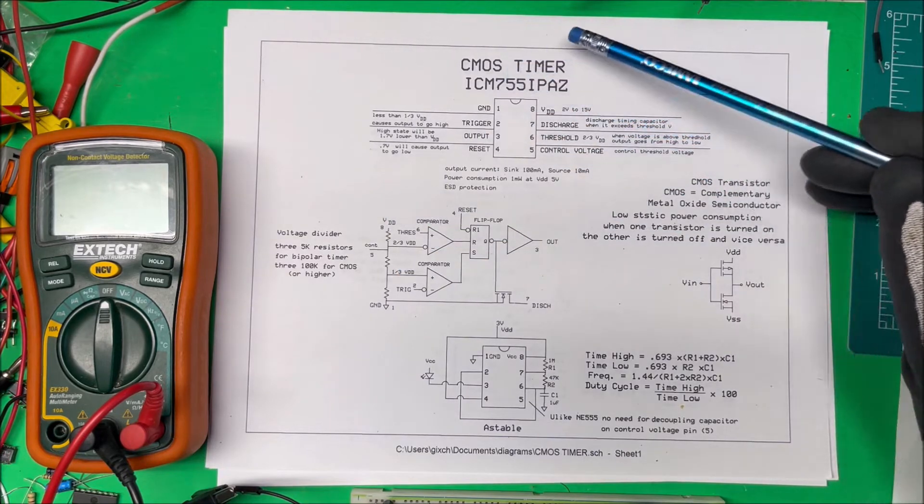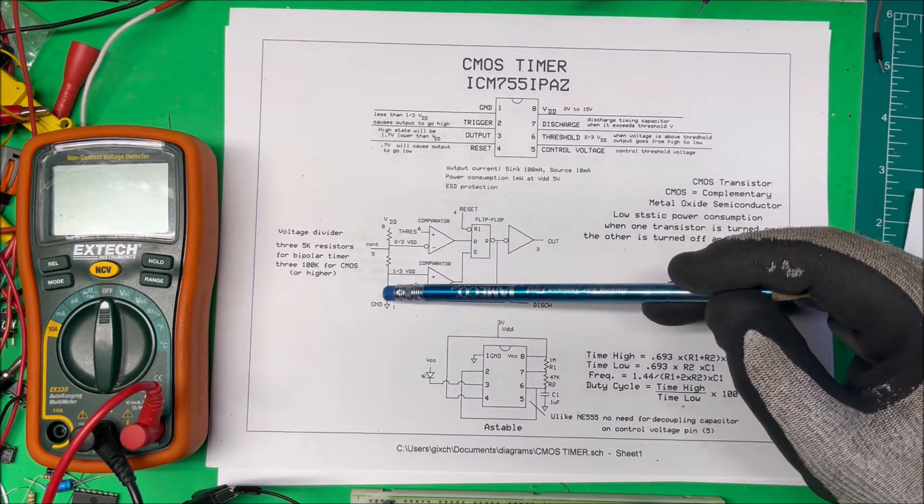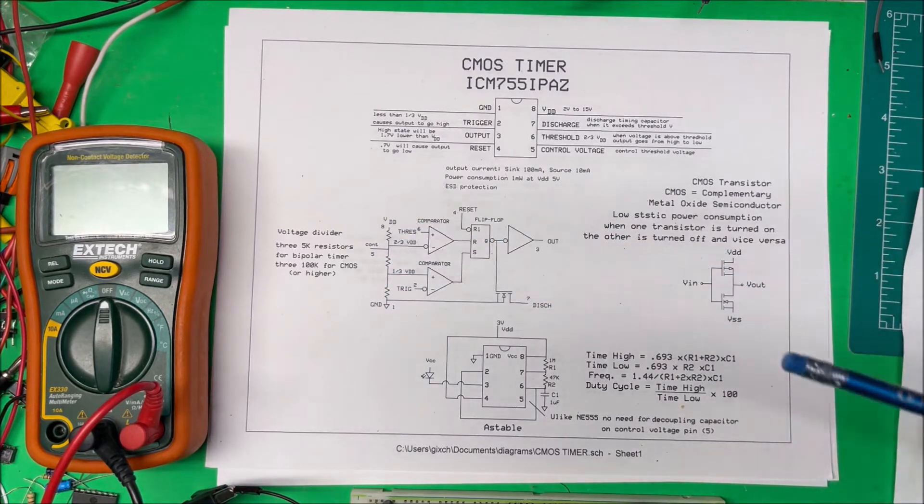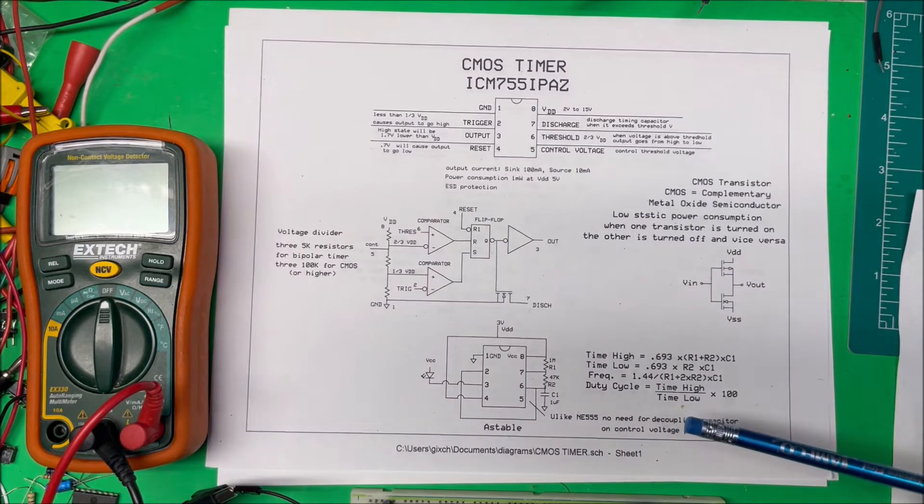Now on these CMOS timers, these resistors are over 100k each, maybe 125k each. And that keeps the power consumption down also.